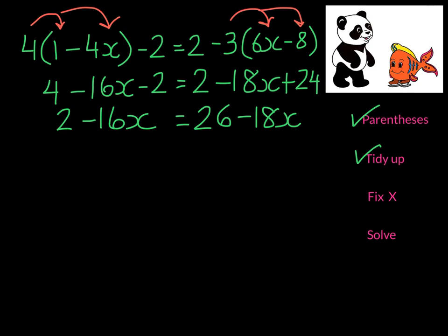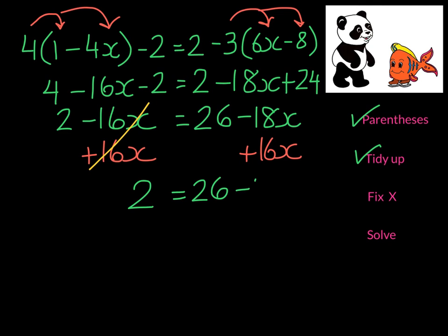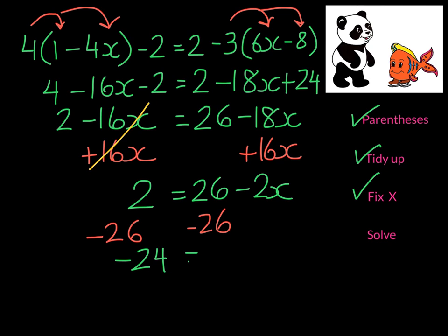At this point we have x's on both sides of the equation — negative 16x and negative 18x. I'm going to do the inverse of subtracting 16x, which is to add 16x on both sides. On the left-hand side the x's are going to go and I'm left just with 2. On the right-hand side I have 26 minus 2x. So we've fixed x. Now we're going to do inverse operations — I'm going to subtract 26 from both sides. On the left-hand side I get negative 24, and on the right-hand side I'm left with negative 2x. Now we divide by negative 2 on both sides, and x is equal to 12.